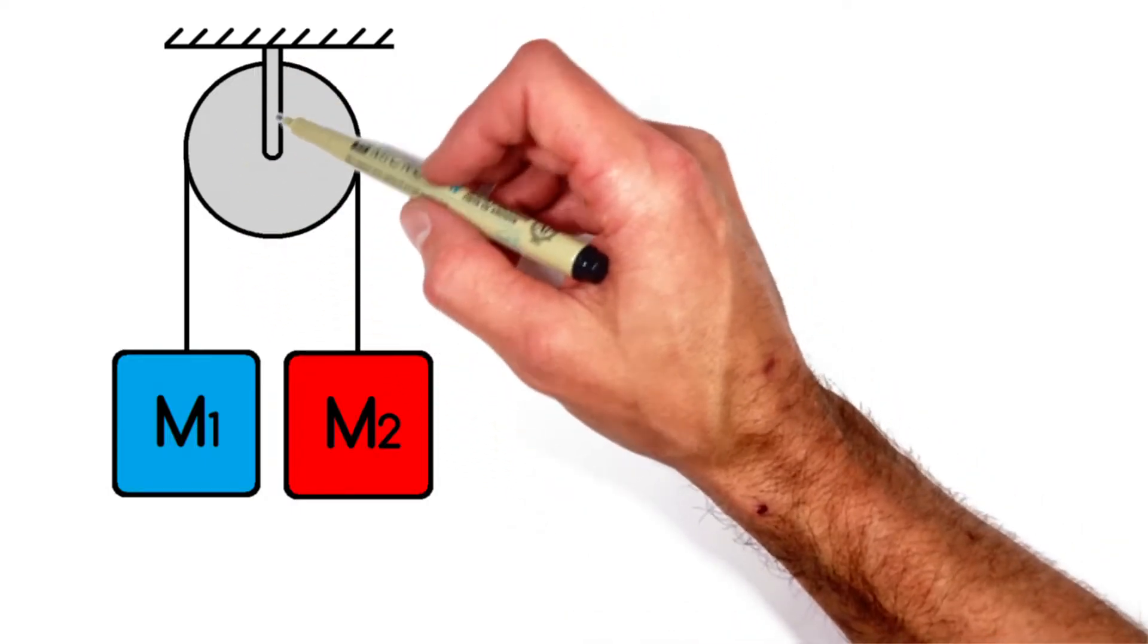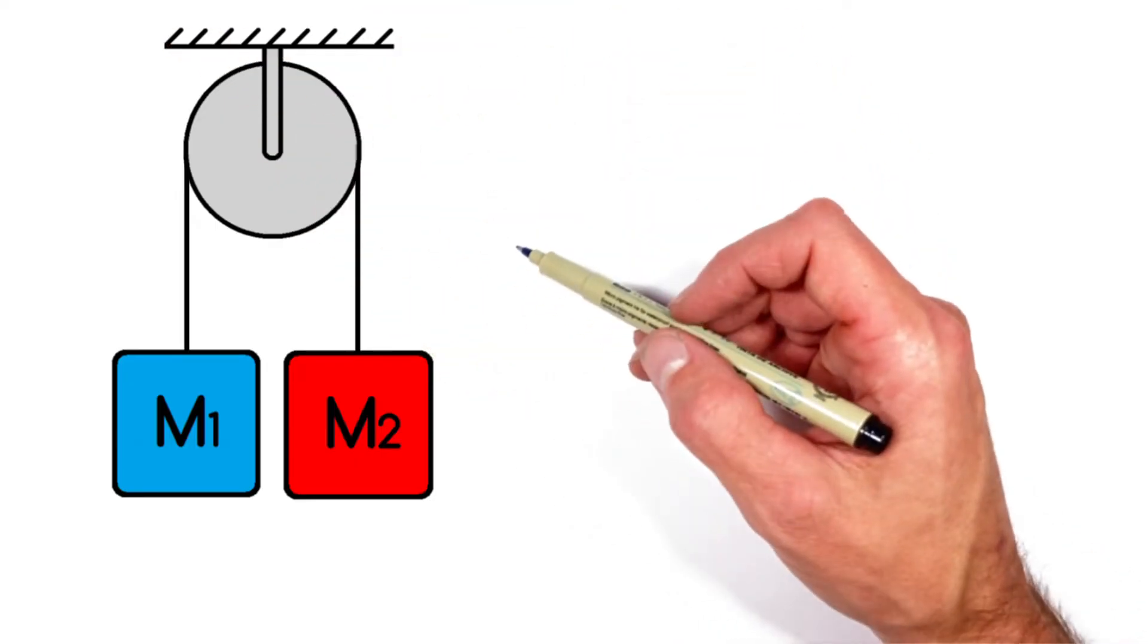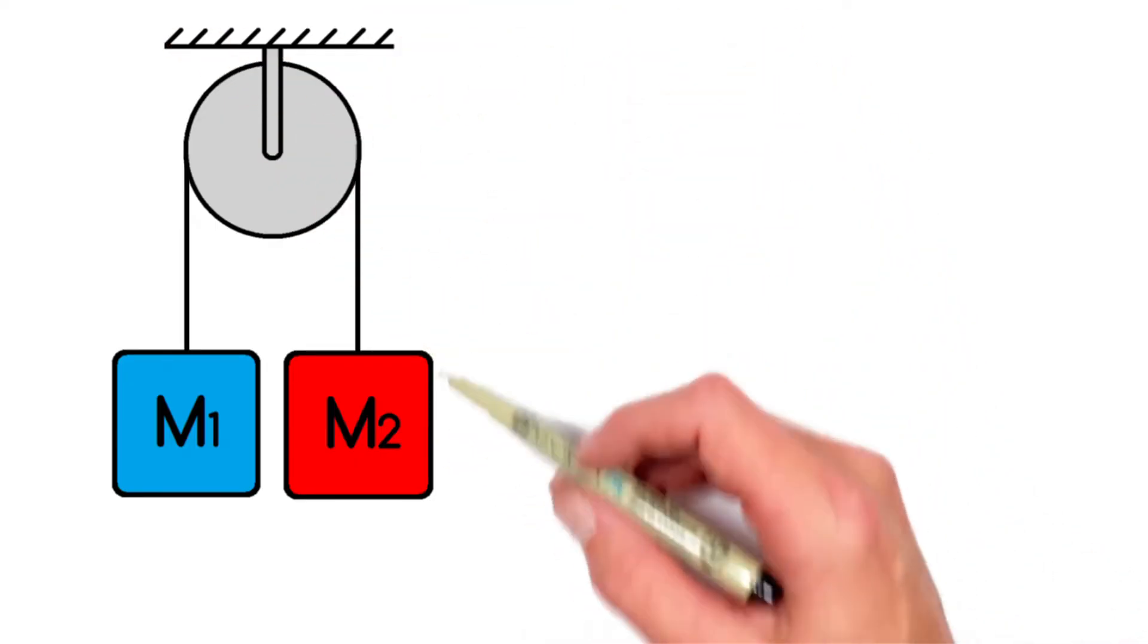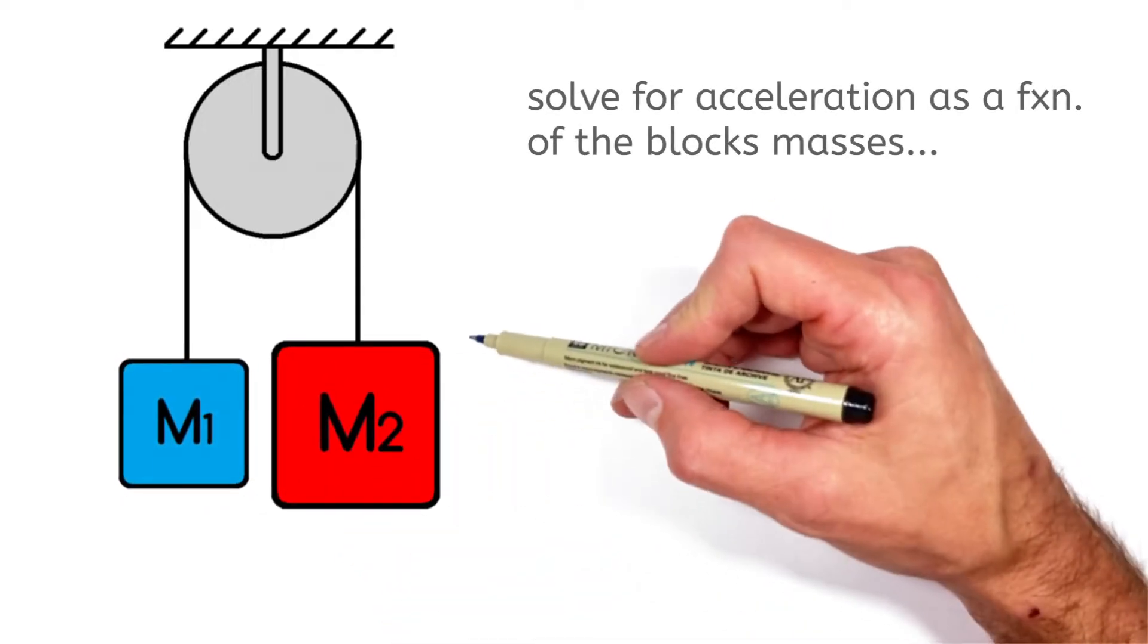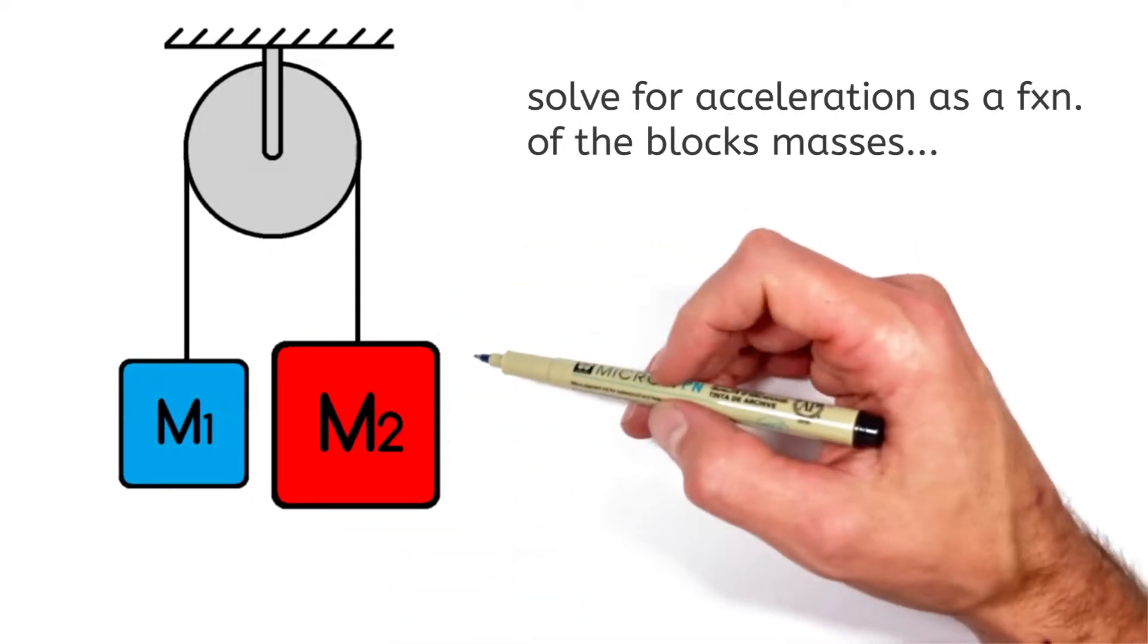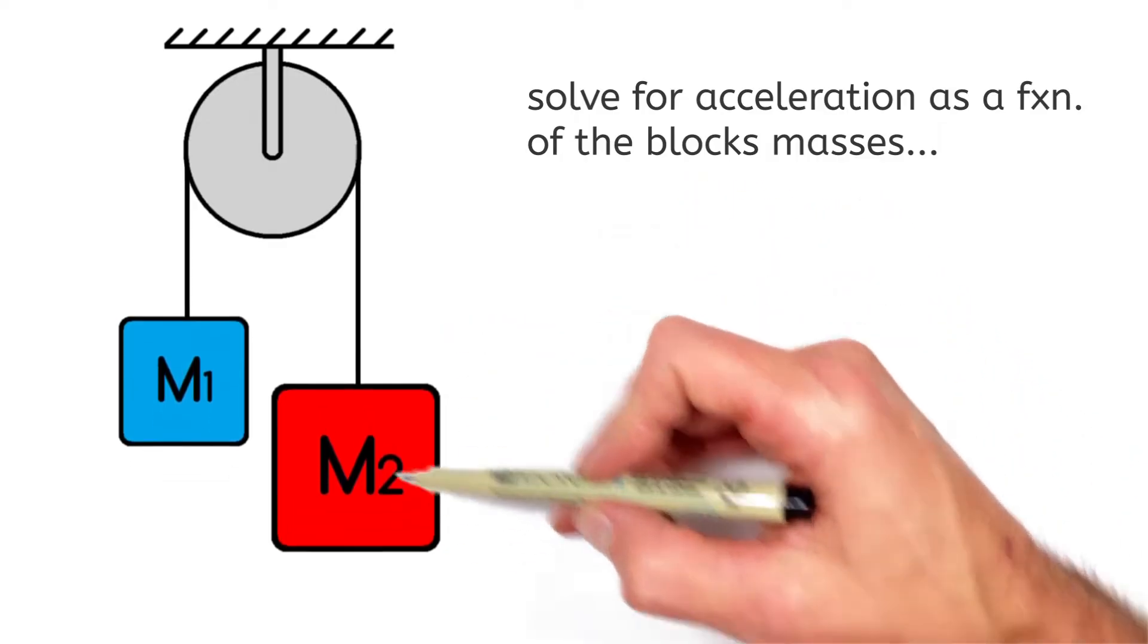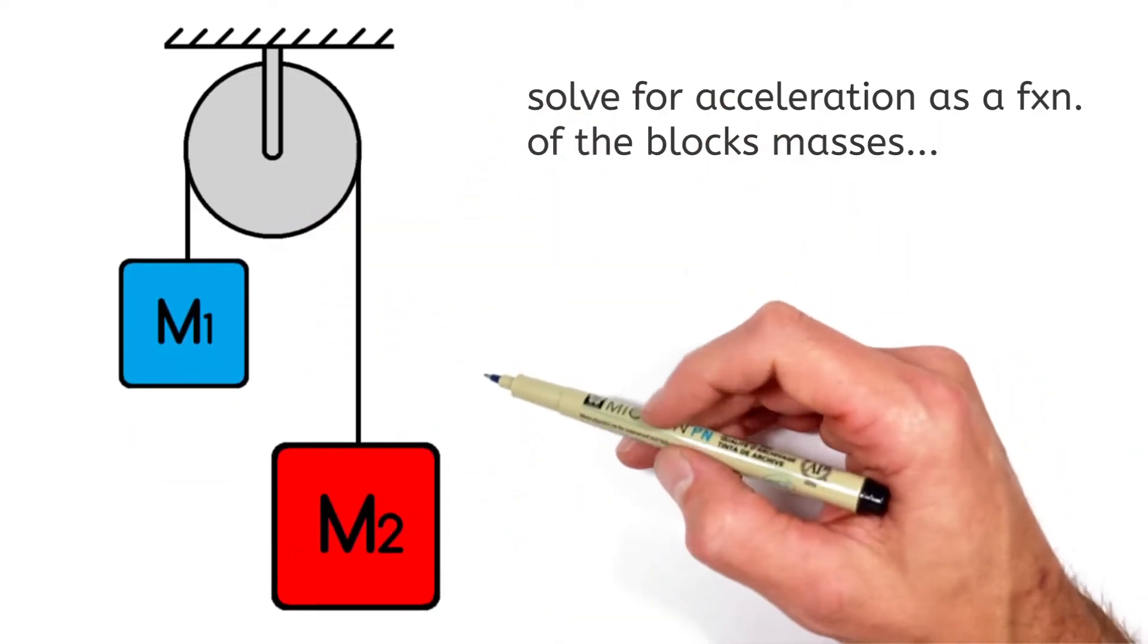Now this pulley is fixed in place, connected to something like a ceiling up here, and the premise of this problem is that if one of these blocks is more massive than the other block, we want to solve for the acceleration of each of these blocks as this heavier block gets pulled downward and in turn the lighter block gets pulled upward.